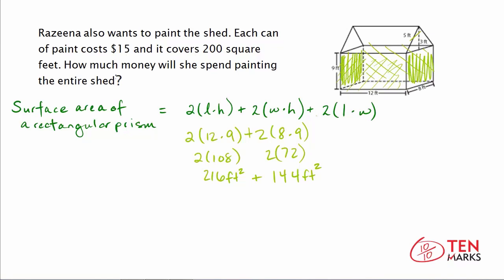The last part of the formula would normally include 2 times the length times the width, covering the bottom and the top. However, she's not going to paint the floor, and the top is covered by the roof — that's not even an exposed surface. So we skip that term. The surface area of the rectangular prism is simply 216 plus 144, which equals 360 feet squared.